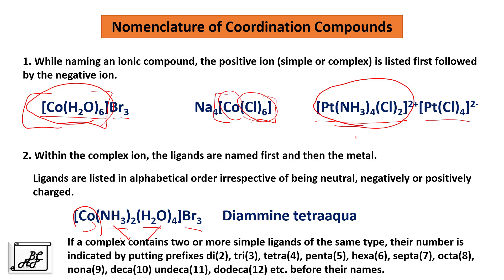If the coordination sphere contains two or more simple ligands of the same type, their number is indicated by prefixes: di, tri, tetra, penta, hexa, septa, octa, nona, deca, undeca, dodeca, etc., placed before their names. That is how we named it as diamine tetraaqua.